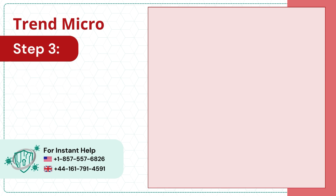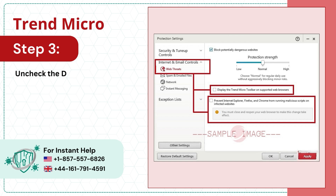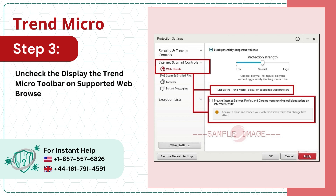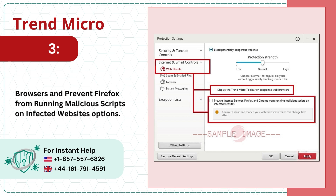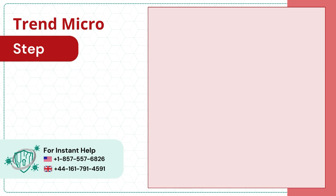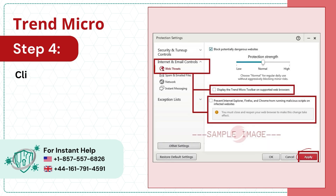Step 3: Uncheck the 'Display the Trend Micro toolbar on supported web browsers' and 'Prevent Firefox from running malicious scripts on infected websites' options. Step 4: Click Apply and OK to save the changes.